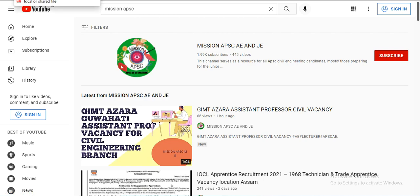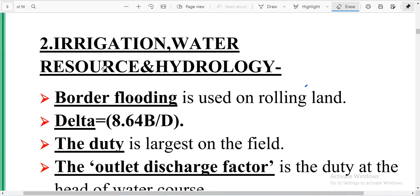Today we will discuss irrigations, water issues, and hydrology. This one-liner is very important. The first is border flooding. Border flooding is used on rolling land where we have the land to rolling, so we use the border flooding.